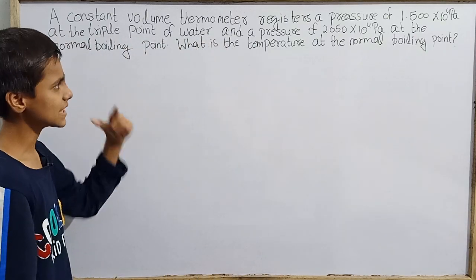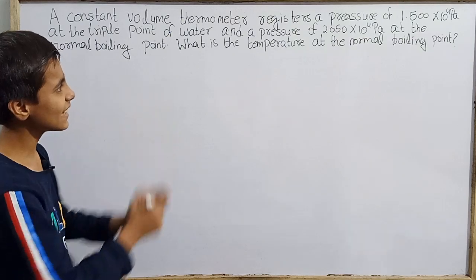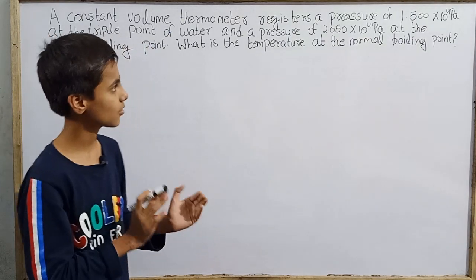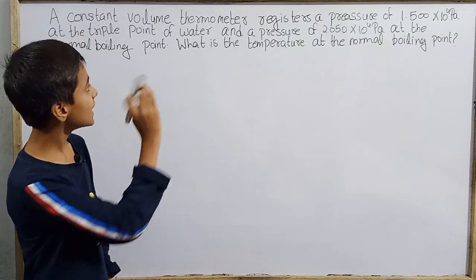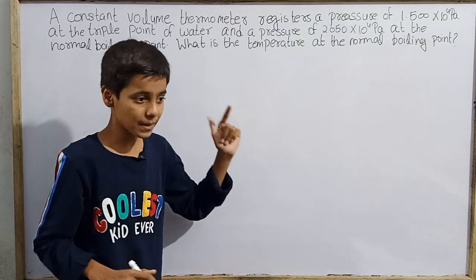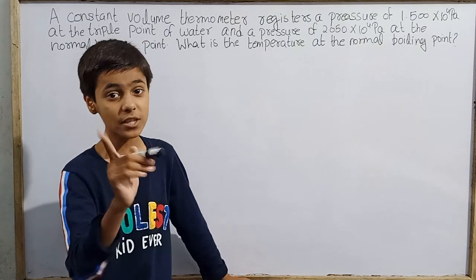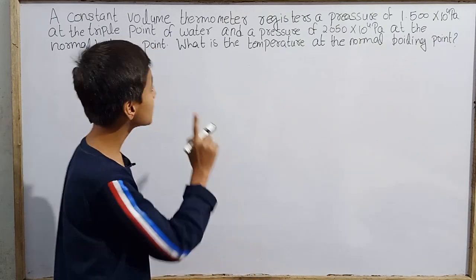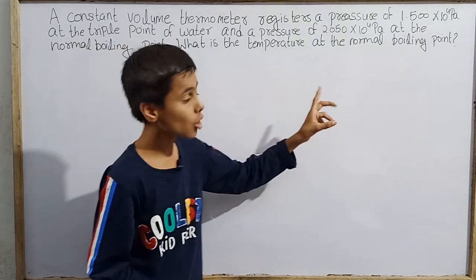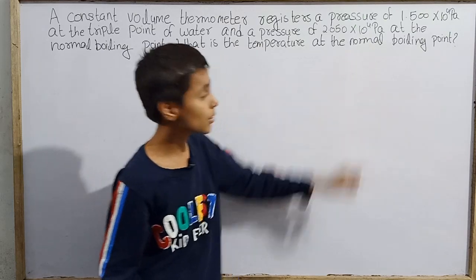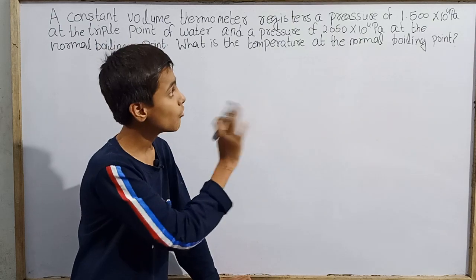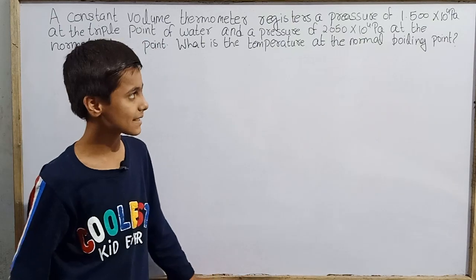Now this is really interesting but also very easy. What we have to do is a constant volume thermometer. Volume is constant. At the triple point of water, this constant volume thermometer has a pressure of 1.5 into 10 power 4 pascal.